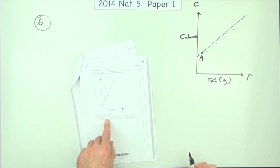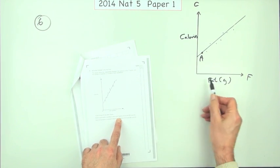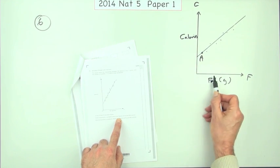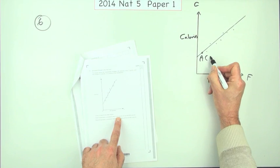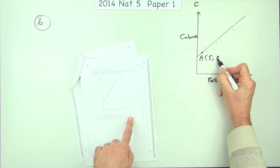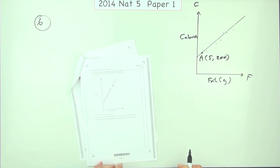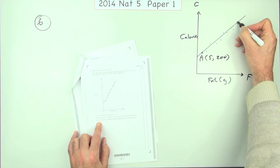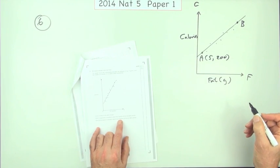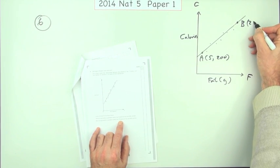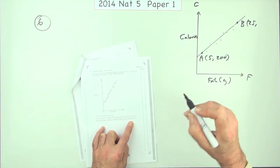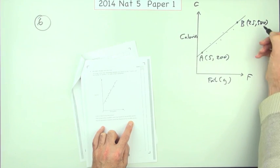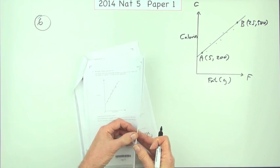It puts in A and make sure you get these the right way around. It's fat along, calories up. It's five grams of fat and 200 calories. Point B represents a sandwich which is 25 grams of fat and 500 calories. So what's the question?